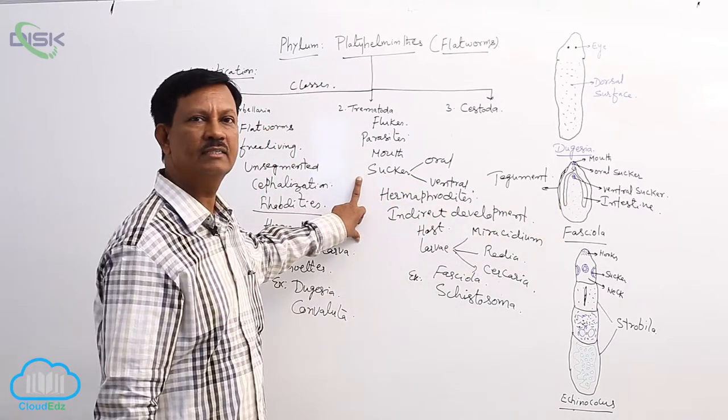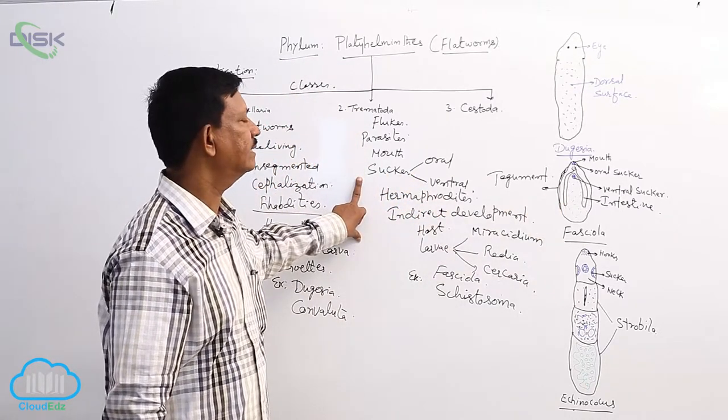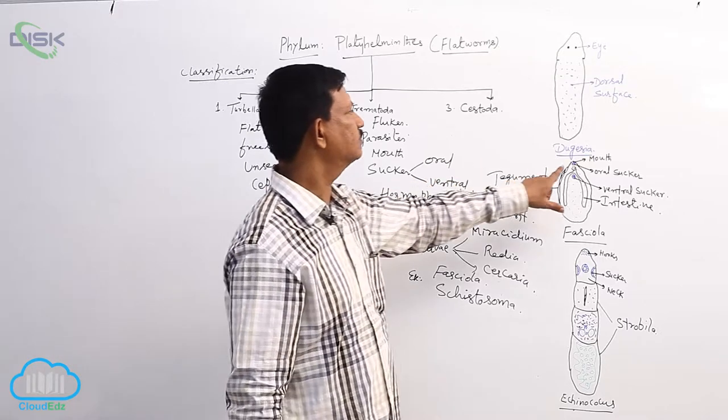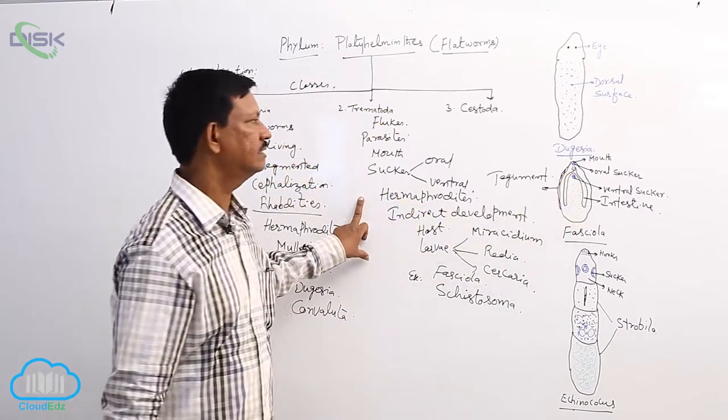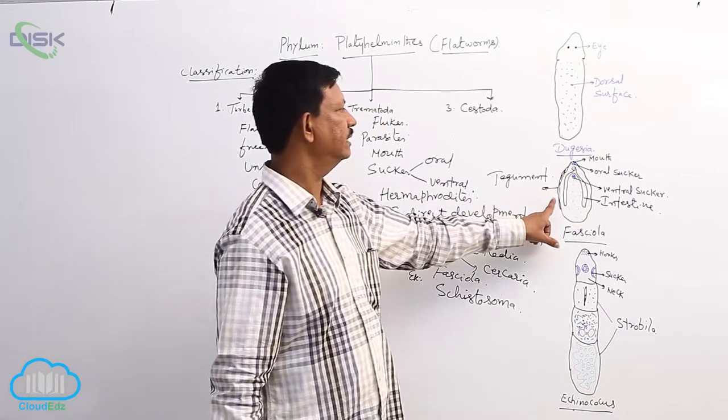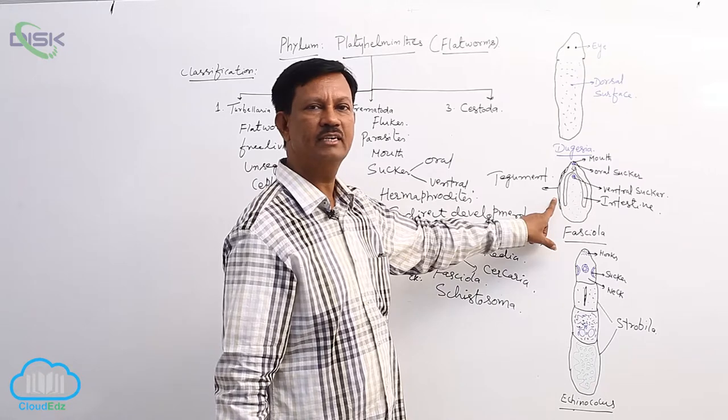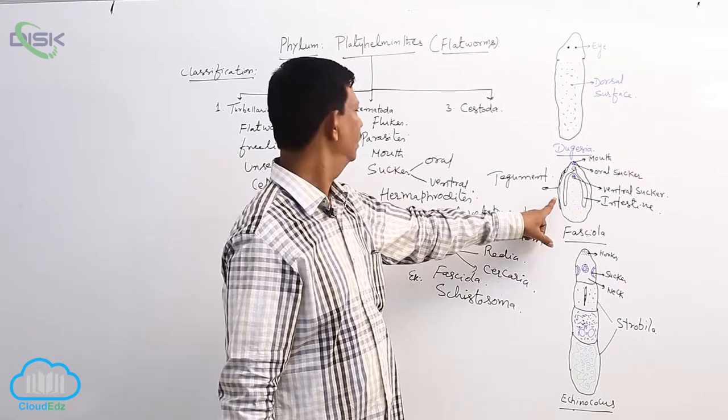There are two suckers usually present, they act as adhesive organs. One is present around the mouth, the oral sucker, and on the ventral side another sucker, the ventral sucker is present. The body is externally covered by a tough cuticle which is known as the tegument. It gives protection to the parasite.